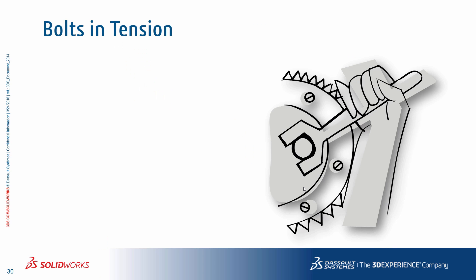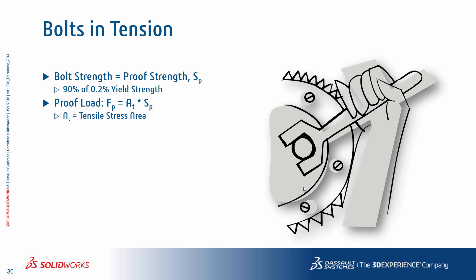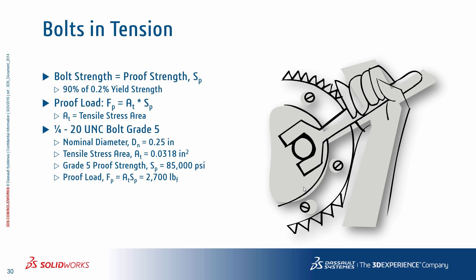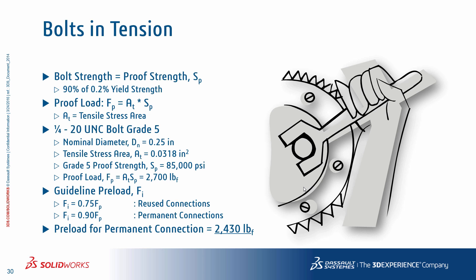Putting a preload on the bolt gives a slightly different response, so let's look at common calculations for estimating the preload required for a permanent connection. The guideline preload for a permanent connection is about 90 percent of the proof load or proof strength of the bolt, calculated using the standard equation. Here the calculation is for a grade 5 bolt with a quarter-inch diameter, resulting in a preload requirement of about 2430 pounds. The handbook reference where you can find these equations is also shown.